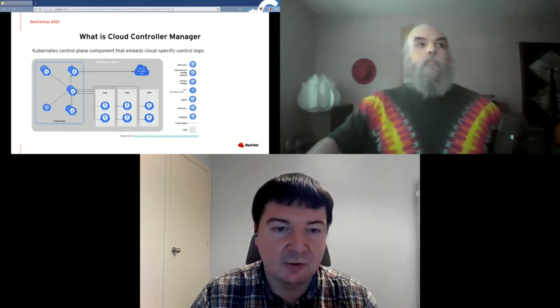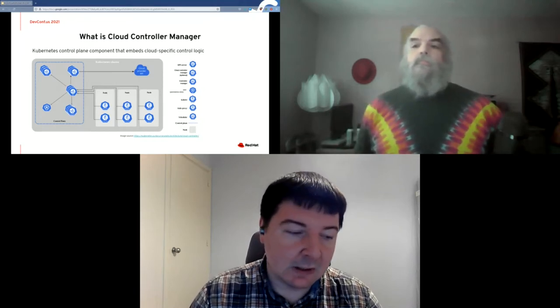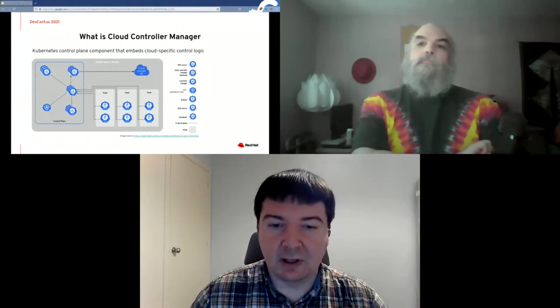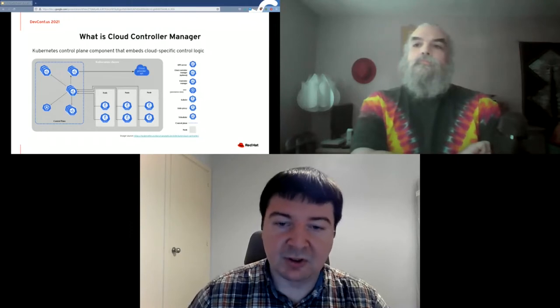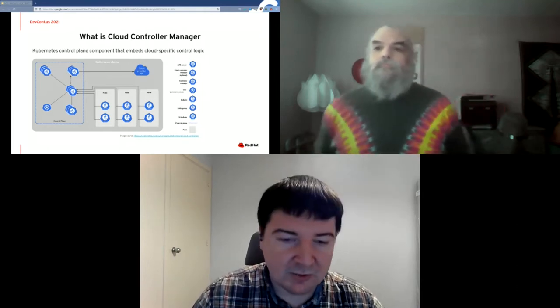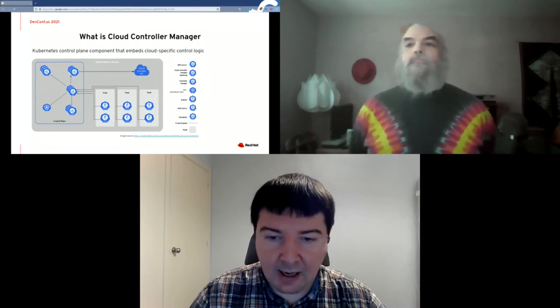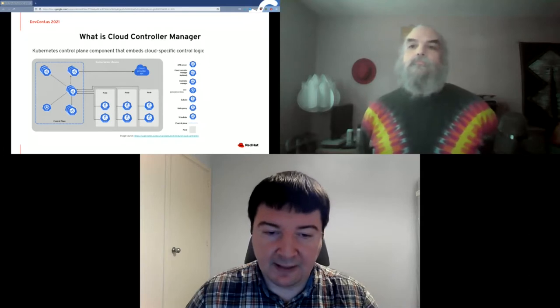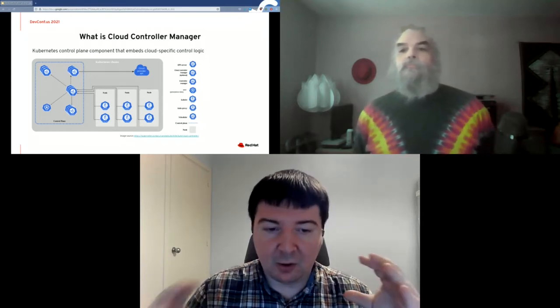Let's start by defining what the cloud controller manager, or CCM for short, is and why it's needed. In a nutshell, the CCM is an optional component of Kubernetes responsible for basic interaction with the cloud platform where the system is installed. This component came about as a result of the evolution of Kubernetes architecture to allow deployment on different cloud platforms. The legacy in-tree cloud providers have been deprecated, and the CCM is now the only way to interact with cloud platforms. Each cloud platform should implement its own CCM based on the cloud provider interface, ensuring all CCMs integrate with Kubernetes in a consistent and extensible way.